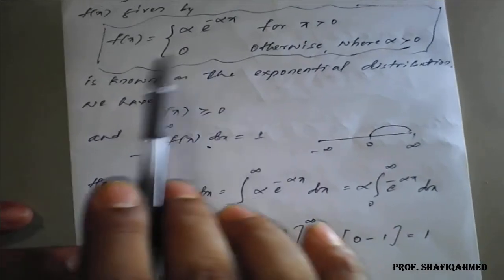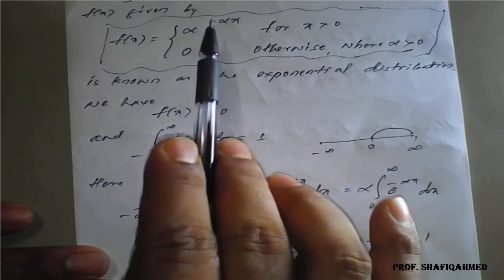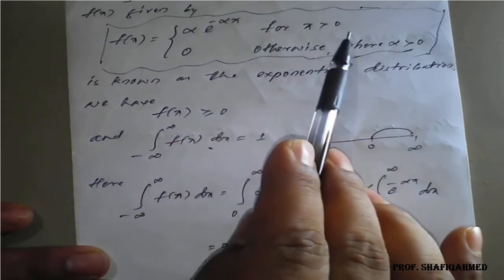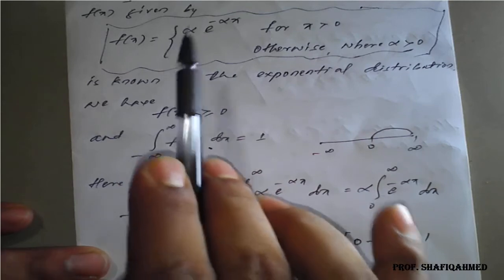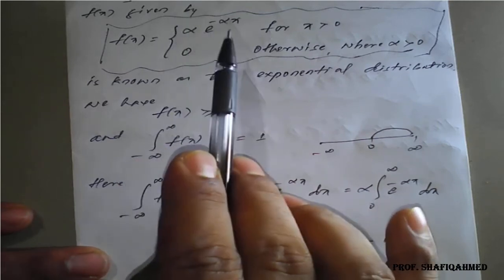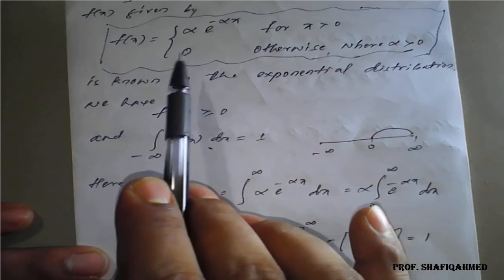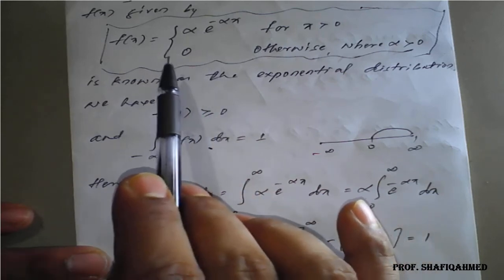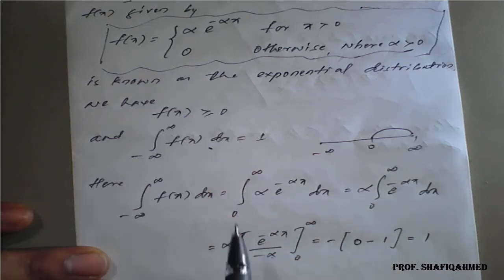The major thing to remember is f(x) = α·e^(−αx) for x positive — this is the expression for the exponential distribution. With this, we will now find the mean, variance, and standard deviation of the exponential distribution, and then look at examples.